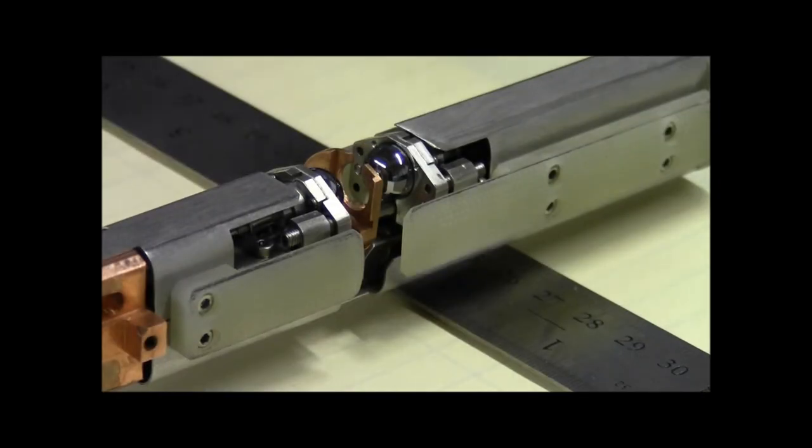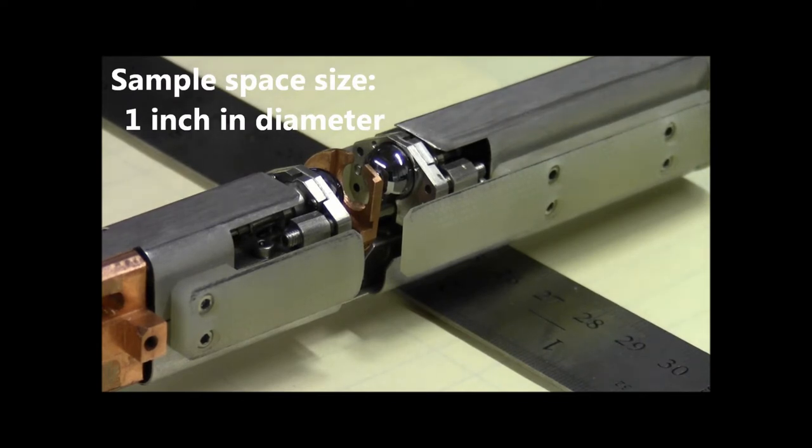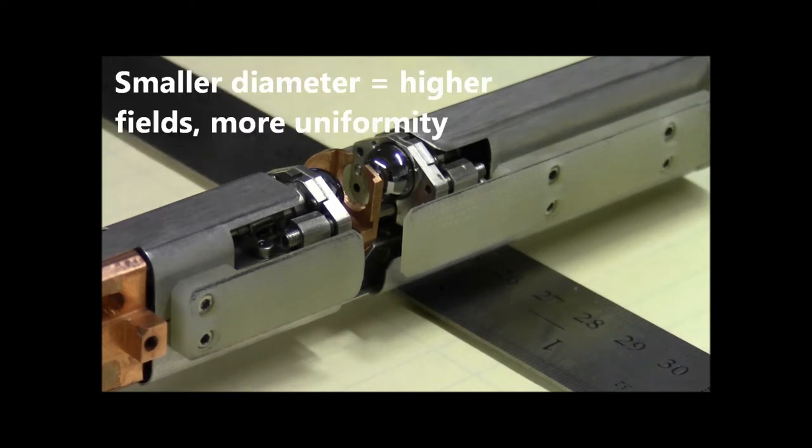This is the sample environment for the terahertz frequency materials characterization system. The first thing you'll notice about this sample space is its size. The overall dimension is actually a little over one inch in diameter, and the reason for that is it needs to fit inside a homogeneous magnetic field environment. The small diameter allows us to get higher fields with more uniformity to that field across the sample space.